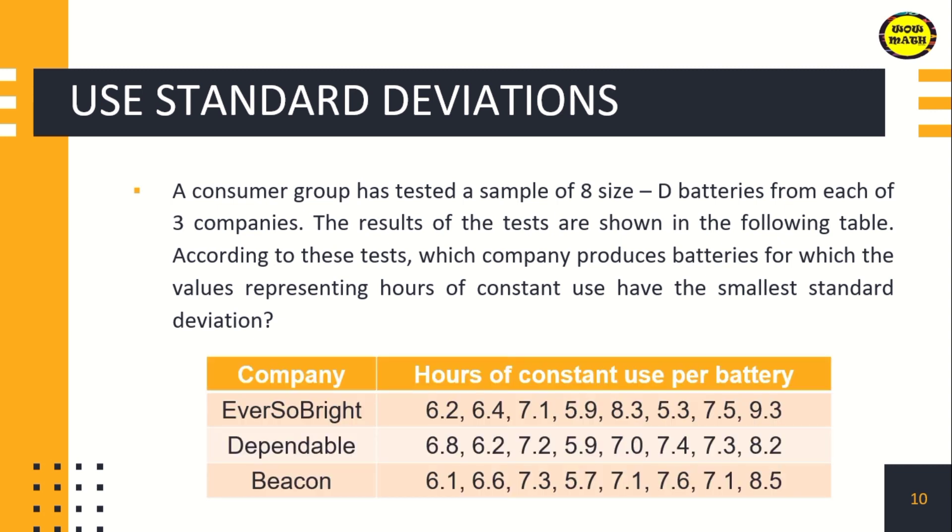For example, in this problem, a consumer group has tested a sample of eight size D batteries from each of three companies. According to this test, which company produces batteries with the smallest standard deviation for hours of constant use? The first company, EverSoBright, has battery hours of 6.2, 6.4, 7.1, 5.9, 8.3, 5.3, 7.5, and 9.3.